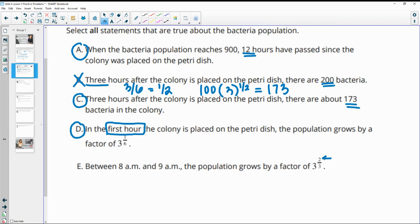So 7 to 9 a.m. is two hours, but it didn't ask you from 7 to 9. It asked you from 8 to 9, which is just one hour. So this should still be one third of a tripling period, not two thirds. So this one is false.